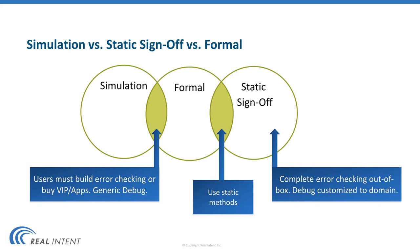If you look at formal and simulation, they are both generic applications. What that means is that the user has to build the error checking. In order to facilitate the error checking, you can buy VIPs, you can buy apps, but it's the user's responsibility to build the error checking. And because these are generic products, the debug is also generic.